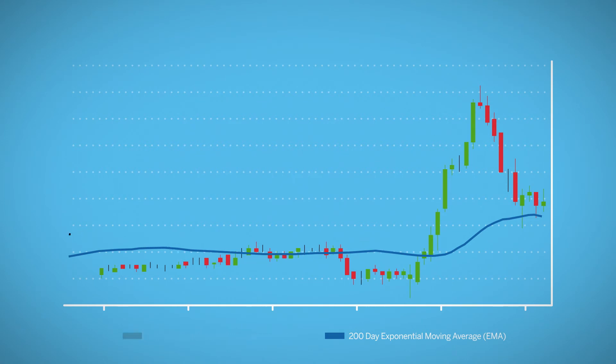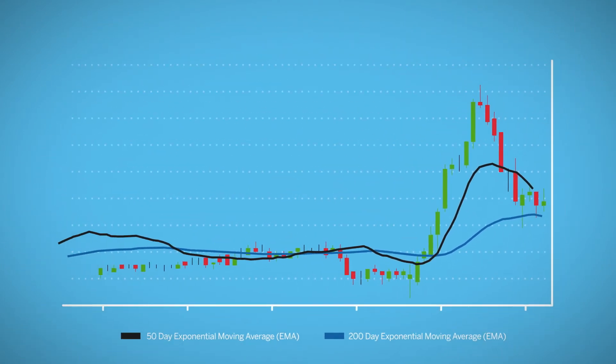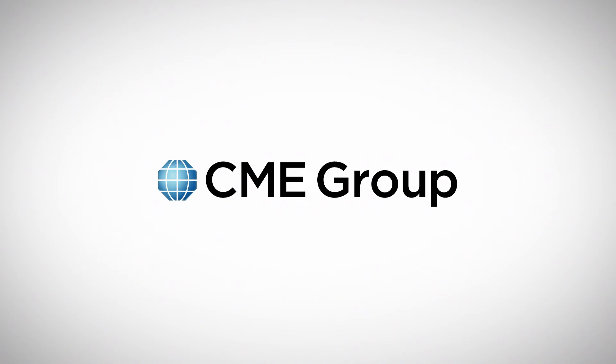For example, if a trader sees that the 50 EMA is crossing above the 200 EMA, this is generally a sign that prices might continue to move up in the future. Moving averages are simple yet powerful tools that traders can use to help visualize where price has been and where price might be moving next.